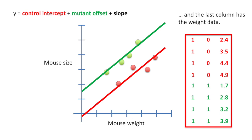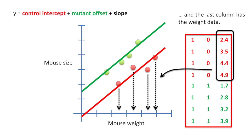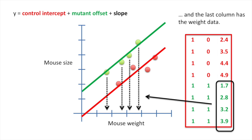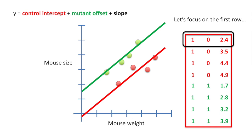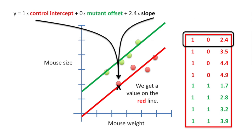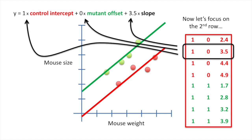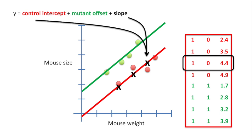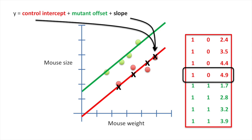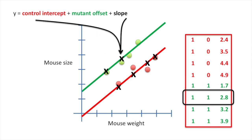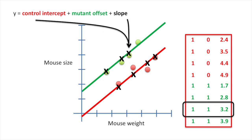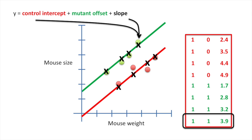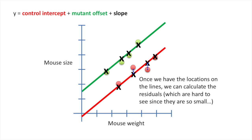The last column has the weight data — the first four values are the x-coordinates for control mice, and the last four are for mutant mice. For the first row, we plug in the numbers and get a value on the control (red) line. For the second row, we again get a value on the red line. Plugging in the values row by row, we get coordinates on either the red or green line: the red line when the mutant offset is off, and the green line when it's on.